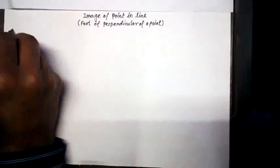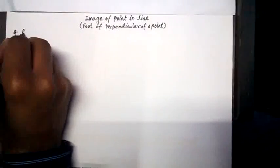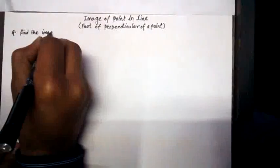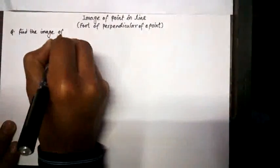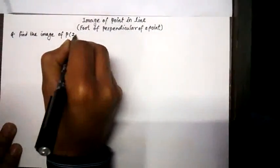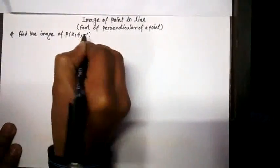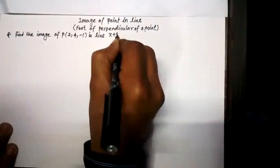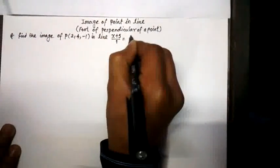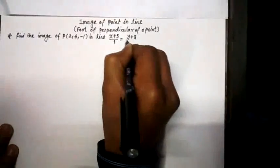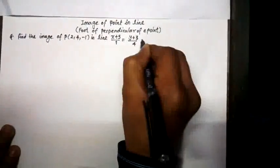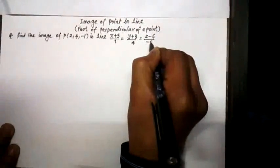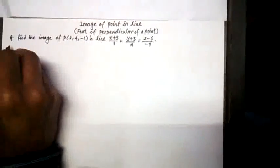So I take a question which has been asked a number of times in CBSE examinations. The question is: find the image of point P with coordinates (2, 4, -1) in the line. The equation is (x+5)/1 = (y+3)/4 = (z-6)/(-9). We start the solution.